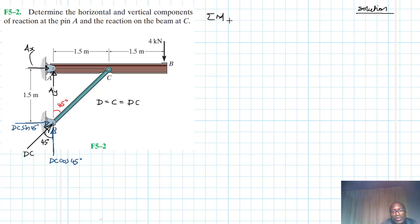So we'll say summation of moments about point A, equal to zero and clockwise being our reference. What do we have? We have, of course, DC cos 45 and AY will not have any moment about point A because their lever arms are equal to zero.